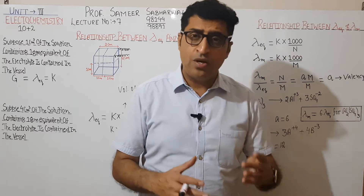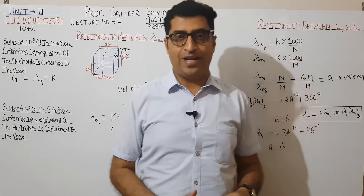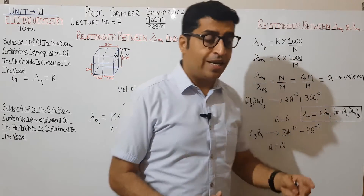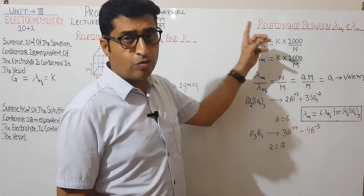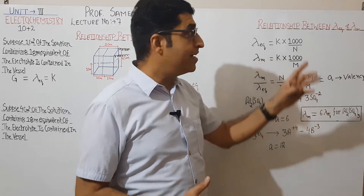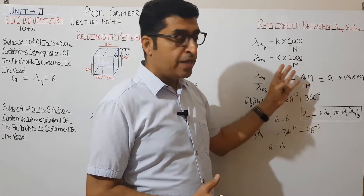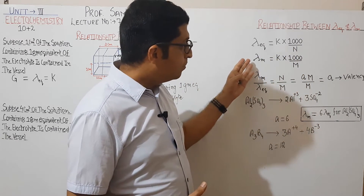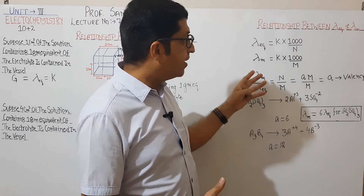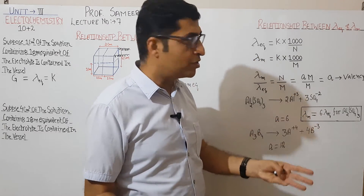For lambda M, we simply consider 1 mole instead of 1 gram equivalent. Now we know their expressions: lambda equivalent equals K into 1000 by N, where N stands for normality, and lambda M equals K into 1000 by M. If I divide molar conductance by equivalent conductance, K being specific conductance will cancel out, and we get a ratio of N by M.